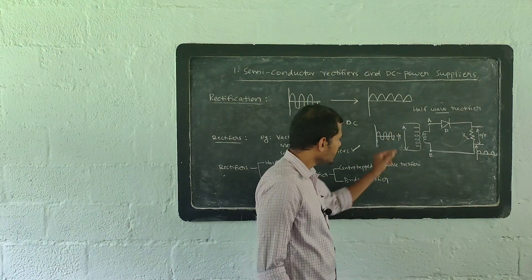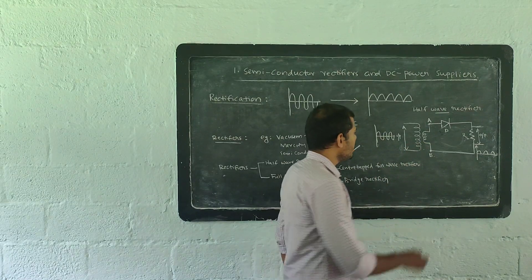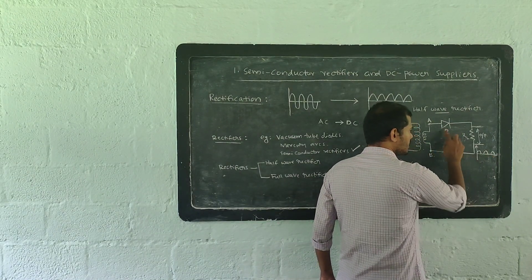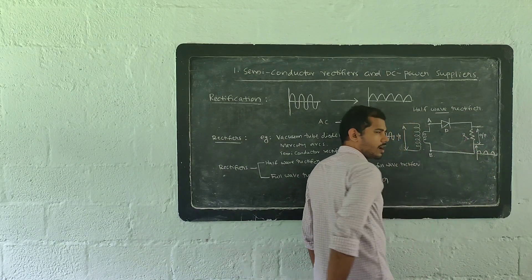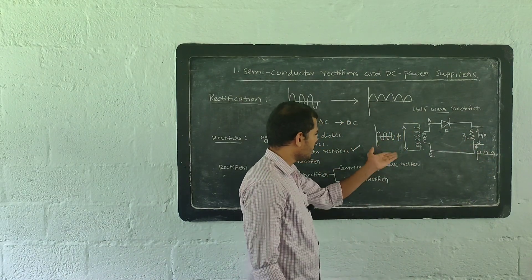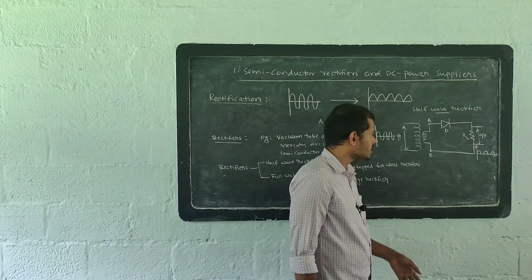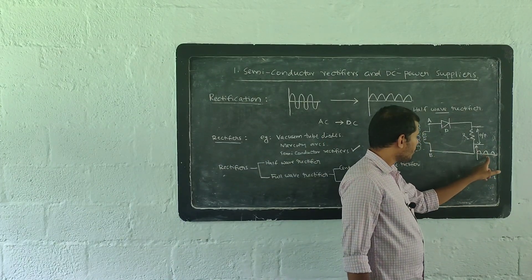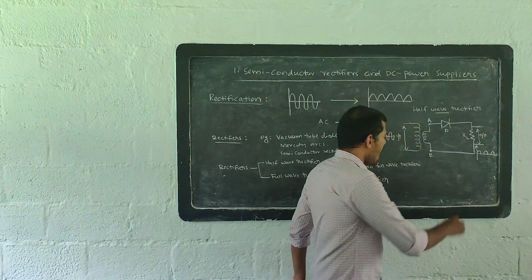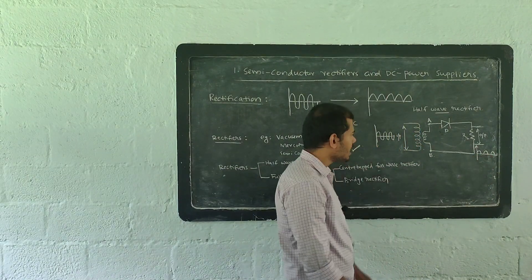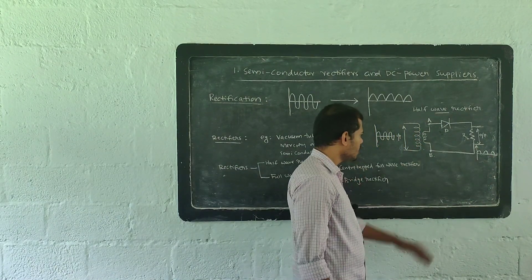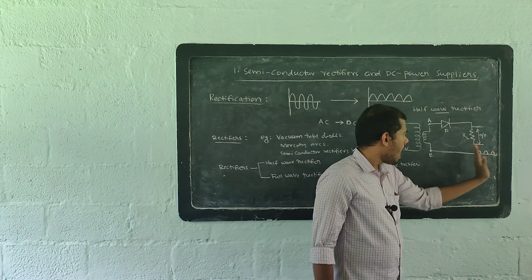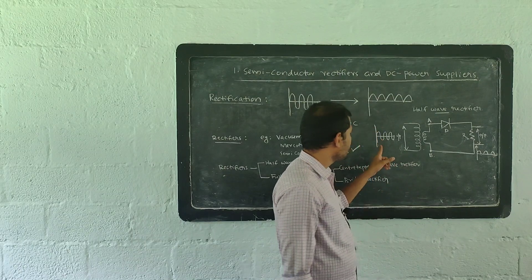Then we get the next positive half cycle introduced to the circuit. The diode is forward biased — it will conduct. The circuit completes and it will conduct. If you look at the input versus the output, only the positive half cycles appear.